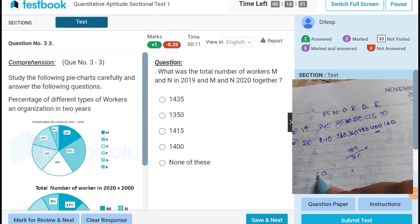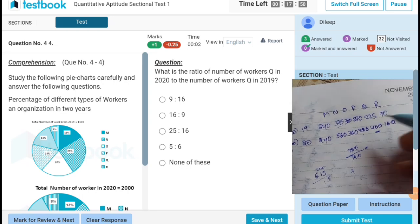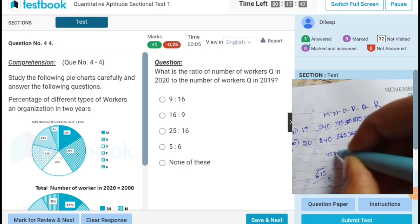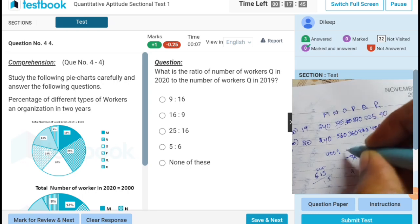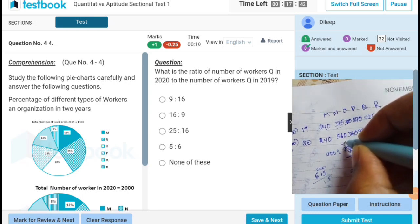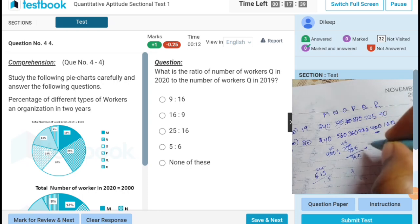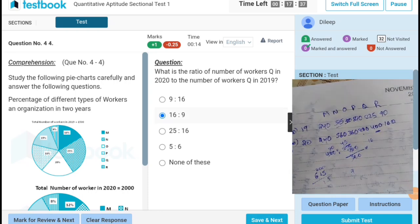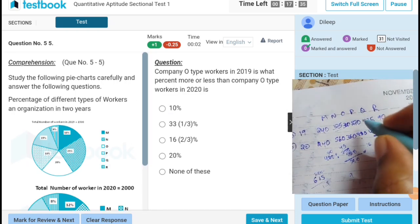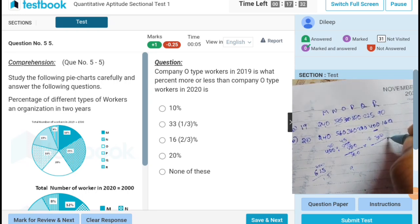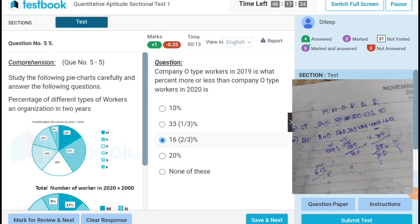M and N in 2020, 800, 1415. The ratio of Q in 2020 to Q in 2019, 16 is to 9. Company O type 2019, O type 2020, 65. 16 and 2/3. Next.